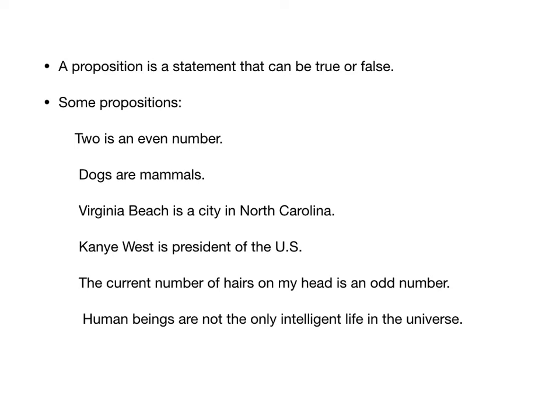The first two are obviously true. Two is even — pretty much the definition of an even number. Dogs are mammals. The next two are false. Virginia Beach is not a city in North Carolina. It would be really weird if a city called Virginia Beach was in North Carolina — Kansas City is a city in Missouri, which is very odd, but Virginia Beach is not in North Carolina. That's a false proposition. Kanye West is not president of the U.S. — also false.